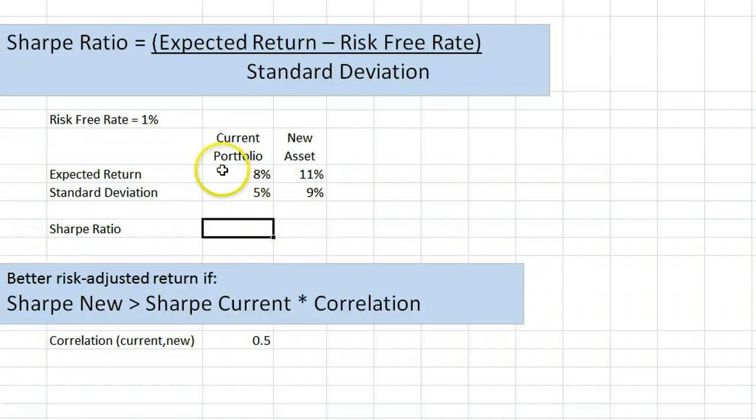As an example, take this portfolio with expected return 8% and standard deviation 5%, while the risk-free rate is 1%. The difference between the expected return and the risk-free rate is 8 minus 1, and we divide by the standard deviation 5 to get 1.4 as the Sharpe Ratio.